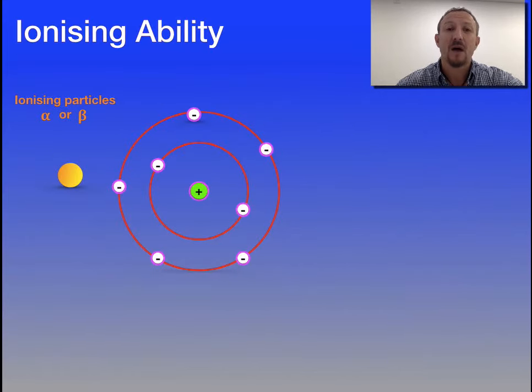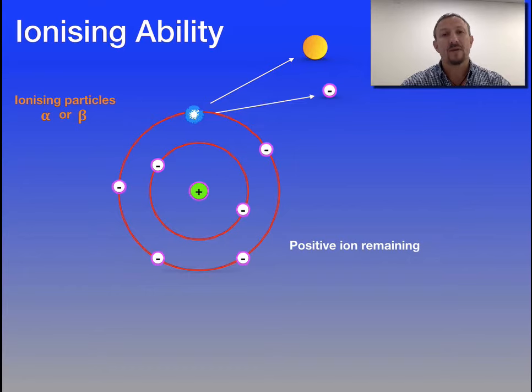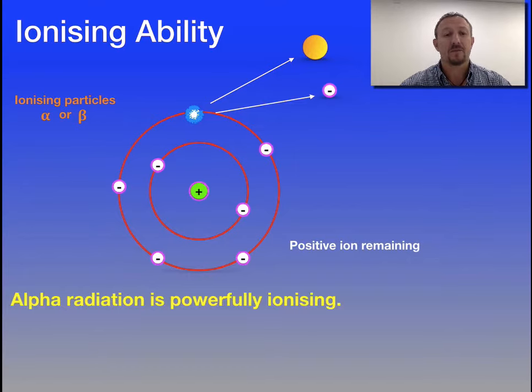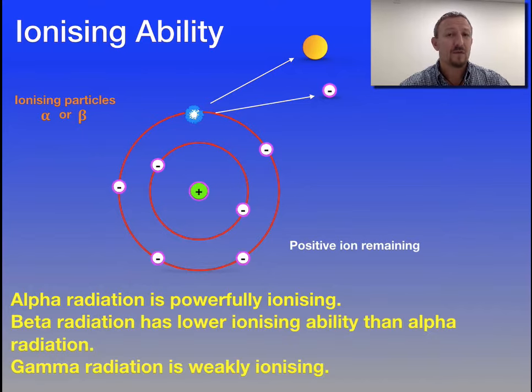The particles also have the ability to ionize an atom. In this simulation, we've got an atom shown by the rings with the electrons on the outside, and then we've got our ionizing particle. Notice this is either going to be an alpha or a beta particle. Gamma being pure energy has no effect. So how does it ionize? Well as it moves, it knocks off the electron, and as a result, by knocking off the electron, the ion becomes positively charged. So the speed and motion of the actual radioactive particle will knock off that electron. Alpha is our most powerful ionizing particle, followed by beta, and gamma has no or very little effect with respect to ionizing the actual atom.